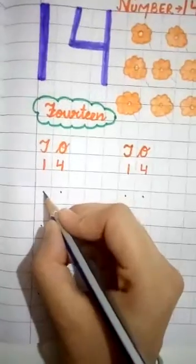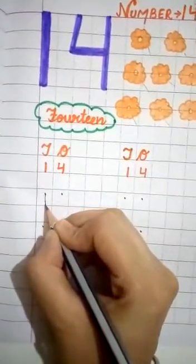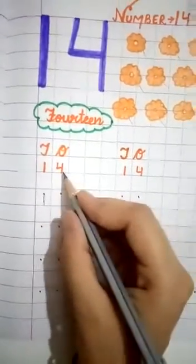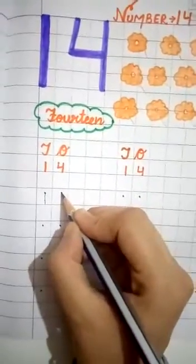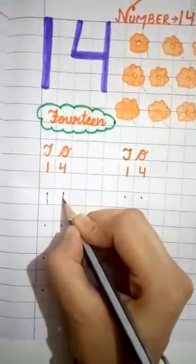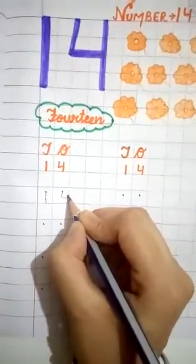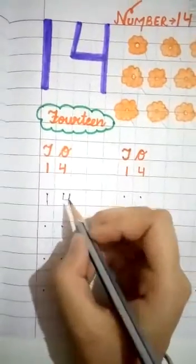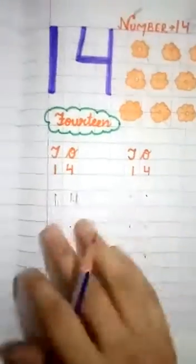Very good. In first block you have to write number 1. Yes, like this. You have to make a standing line like this. Now, you have to make a number 4. First make small standing line. Then make small slipping line and go up and make a standing line. This is a number 4. 1, 4, 14. Very good.